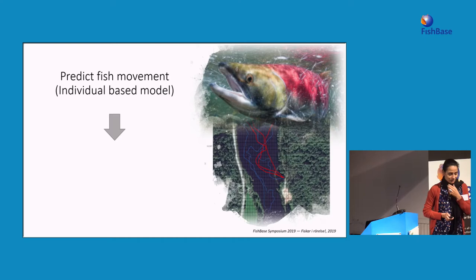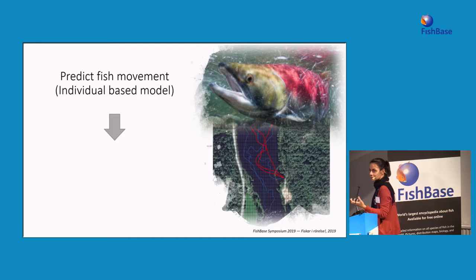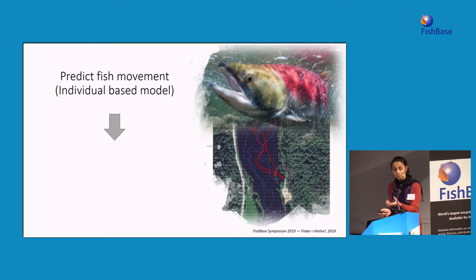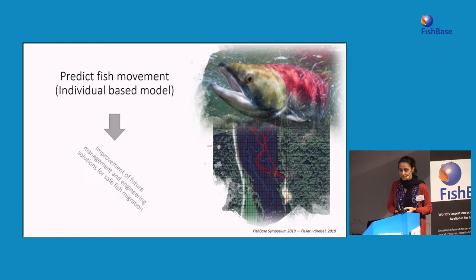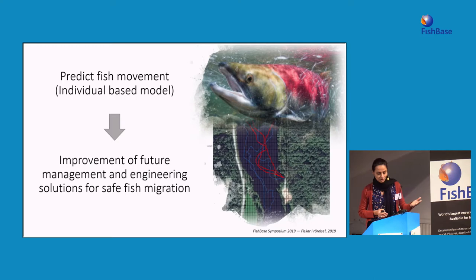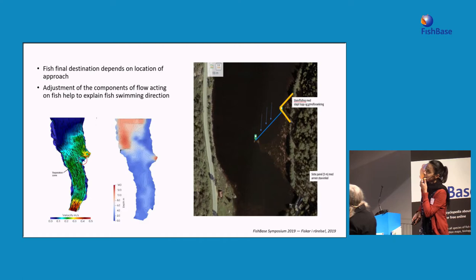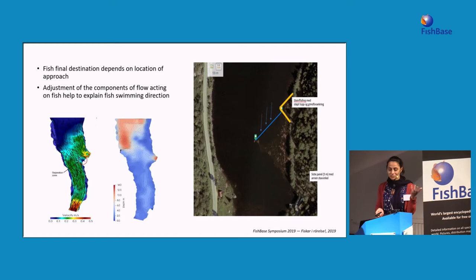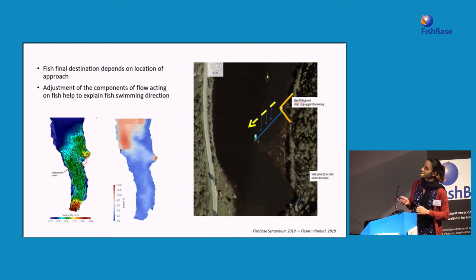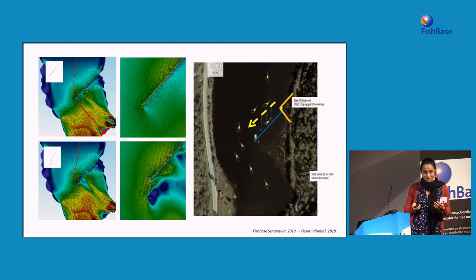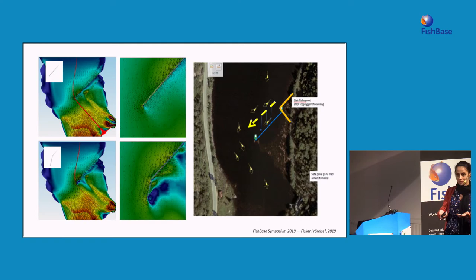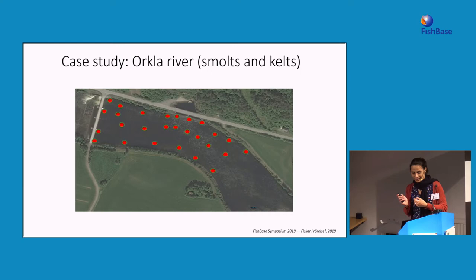We did further research trying to predict fish movement — whether they go left or right — using an individual-based model based on each fish's movement. This information helped to improve future management and engineering solutions for safe fish migration. We are currently doing hydraulic modelling to study different configurations of structures, hopefully to be implemented in the field this spring.